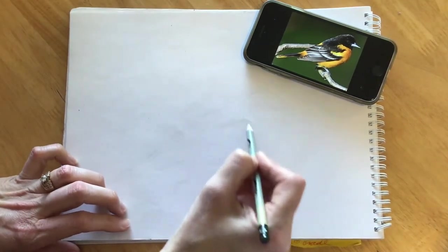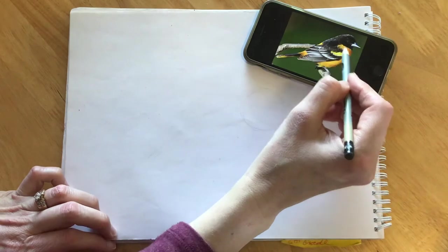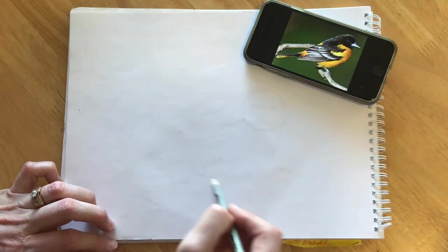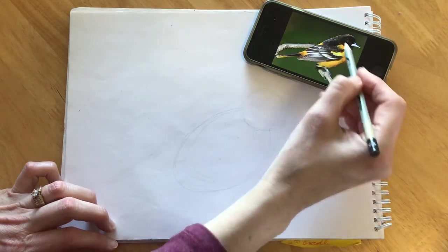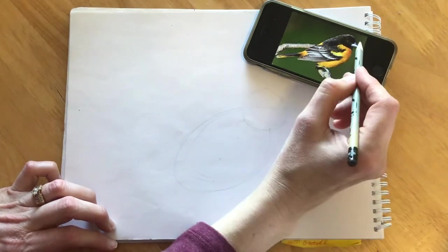So if I was going to block out this Oriole, I notice a circle head and this body has a very large oval. So whatever bird you're looking at, you're kind of looking at what size is that body.